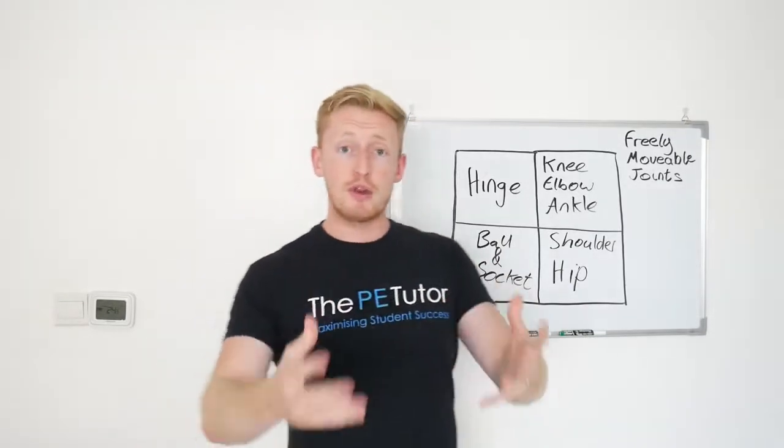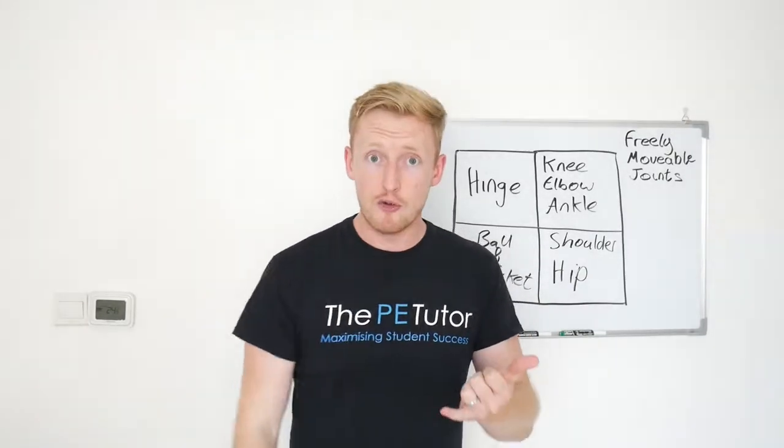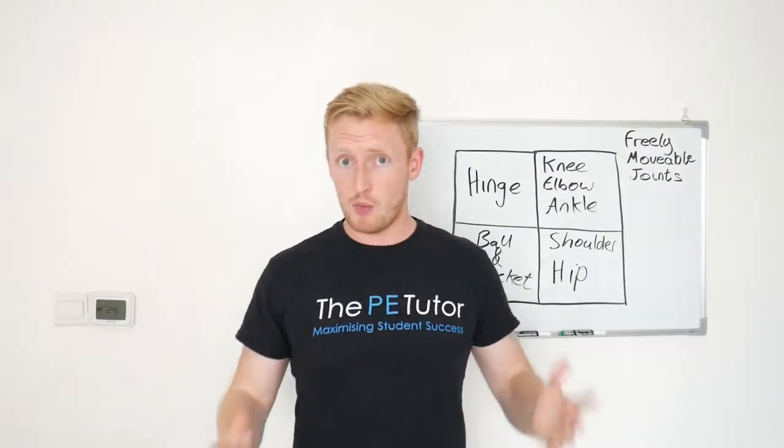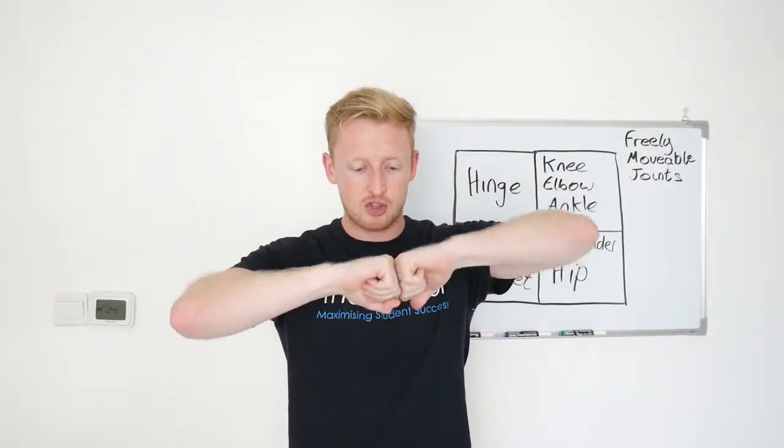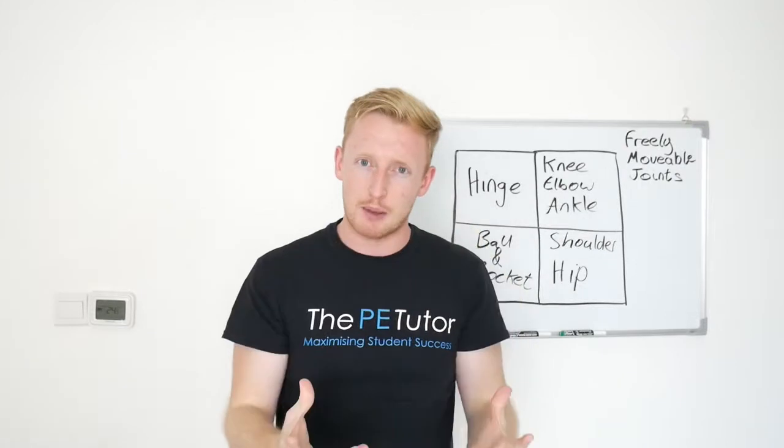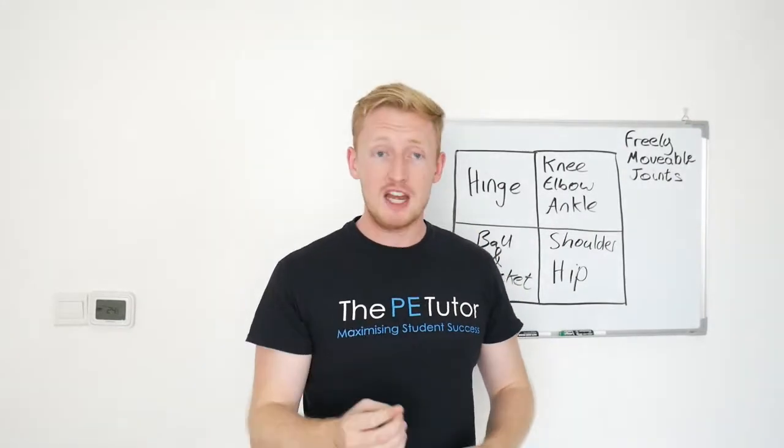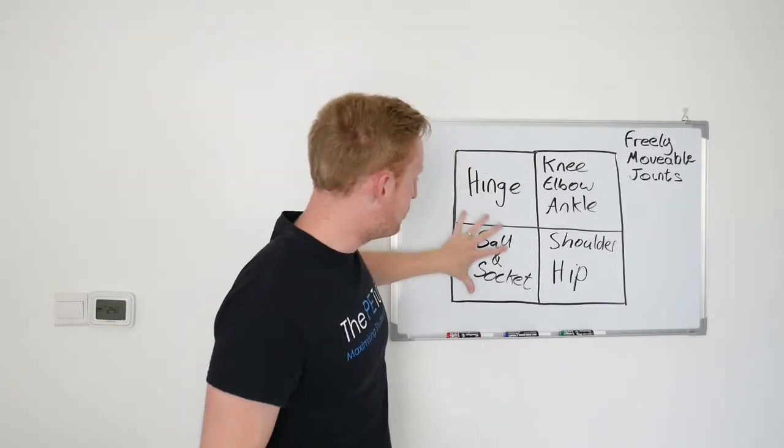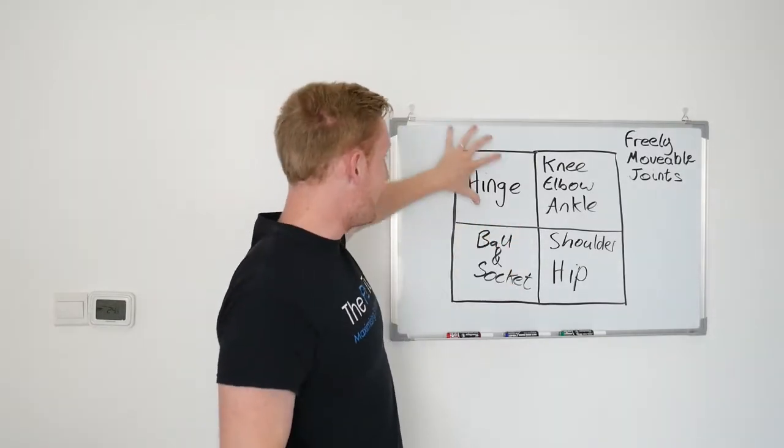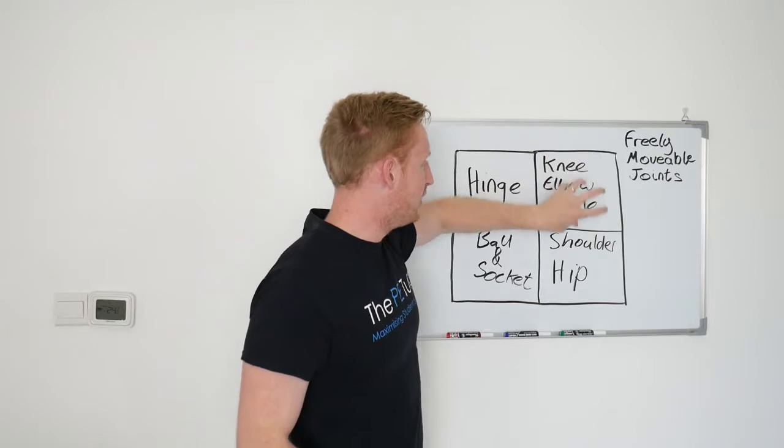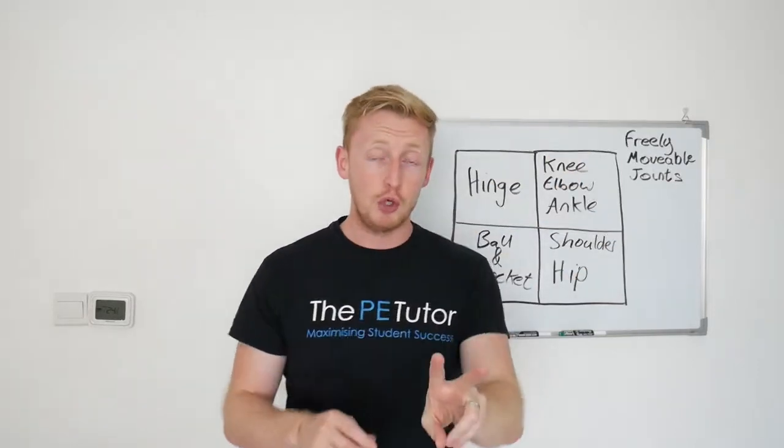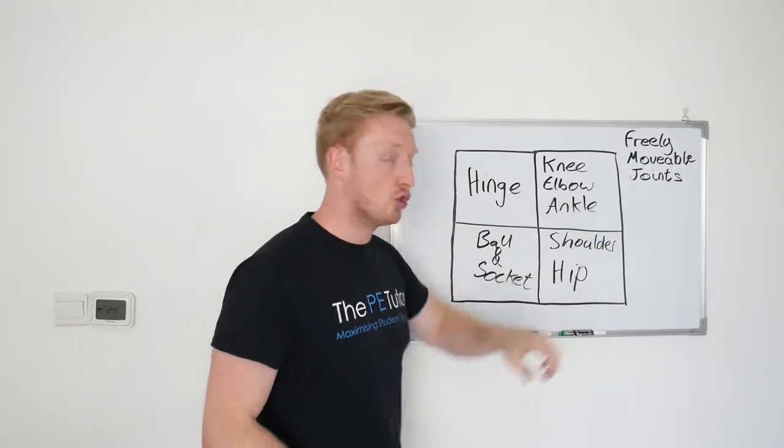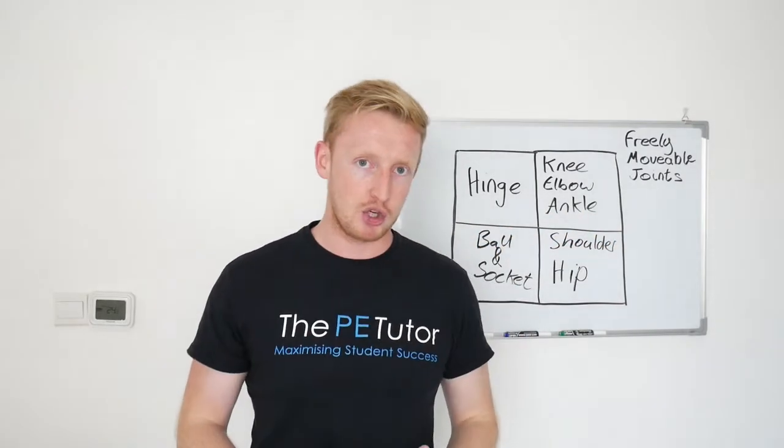Okay, so just to recap, we've got three different types of joint: immovable such as the cranium, slightly movable such as the vertebrae where the cartilage in between sort of squashes and shifts around to allow some movement, and then we have freely movable joints. Two examples in the body being hinge joints and ball and socket joints. You need to know hinge joints as being the knee, elbow and ankle, where you've only got two directions of movement, and then ball and sockets, we've got shoulder joints and hip joints, where they're multi-direction.